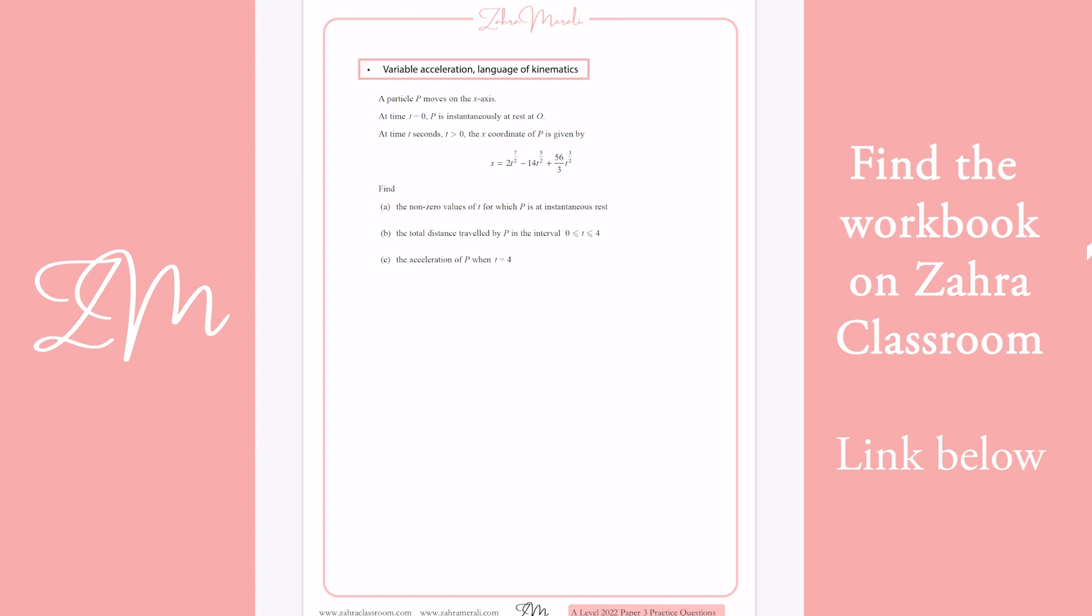So when we've got variable acceleration, we think it's var. And the s can have an x as well. So we've got displacement, velocity, acceleration. We differentiate down and we integrate up. So d for down and we're integrating up.